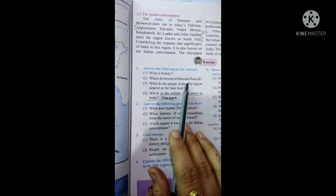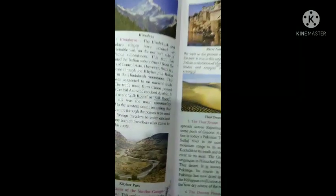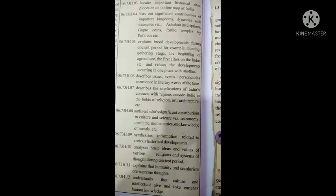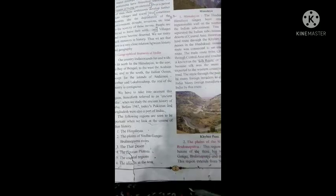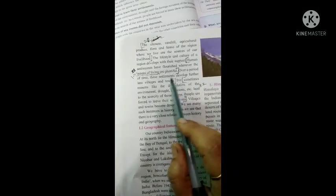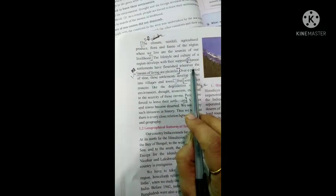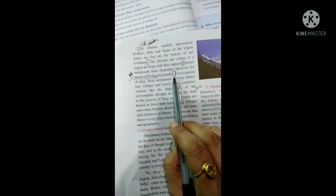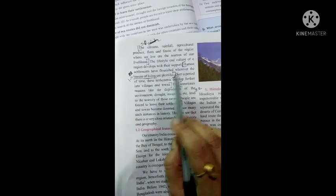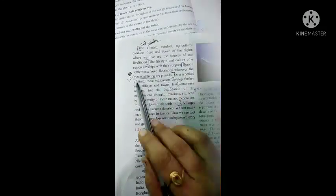Now the next question is: Where do human settlements flourish? So we get the answer. Let me find it out. Page number 2, here you will get the answer. Question number 1.2. Human settlements have flourished wherever the means of living are plentiful. Up to here. The answer is from here to here.